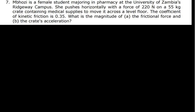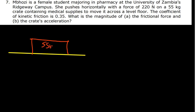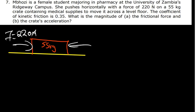Question seven: Muhosi, a female pharmacy student at the University of Zambia Ridgeway campus, pushes horizontally with a force of 220 newtons on a 55 kg crate containing medical supplies to move it across a level floor. The coefficient of kinetic friction is 0.35. What is the magnitude of the friction force and the acceleration?